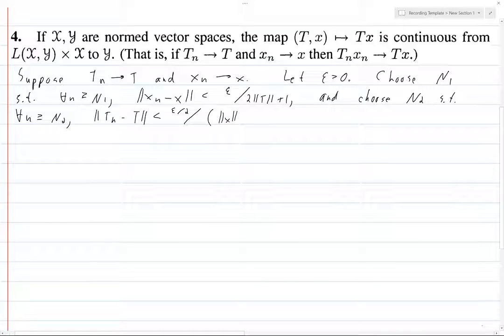Norm of x plus epsilon over 2t plus 1. I know this is pretty messy here, but I hope it's kind of clear that this whole thing here is in the denominator, as is this whole thing here.